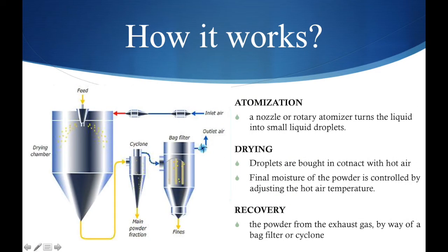Basically, the spray dryer works in 3 steps. The first is atomization, where the nozzle or rotary atomizer turns the liquid into small liquid droplets. The second step, drying, involves the process where the droplets are brought into contact with hot air. Finally, the dry powder is recovered from the exhaust gas through a cyclone or bag filter.